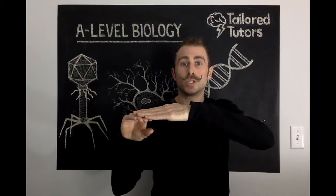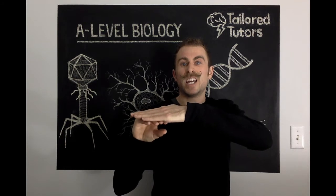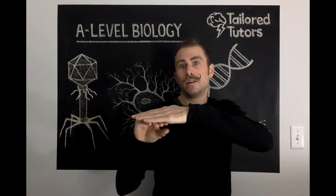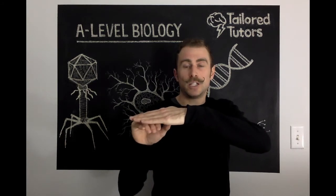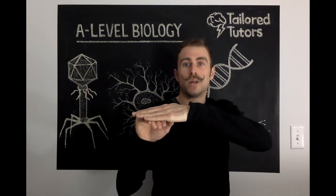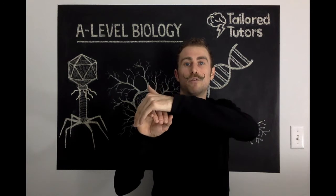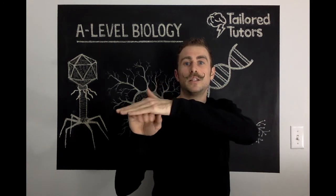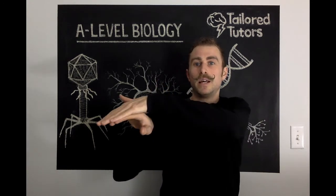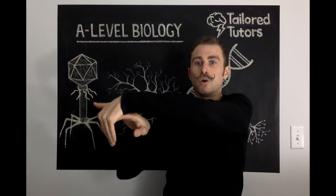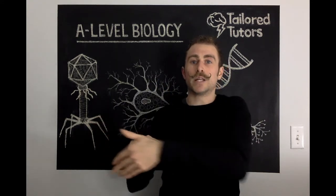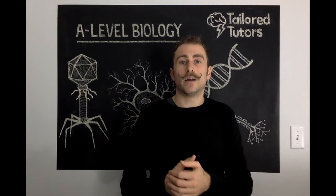In roots, this IAA is going to inhibit cell division and cell growth, which means the top side is going to grow faster than the bottom side, and so the root grows downward — away from the light.